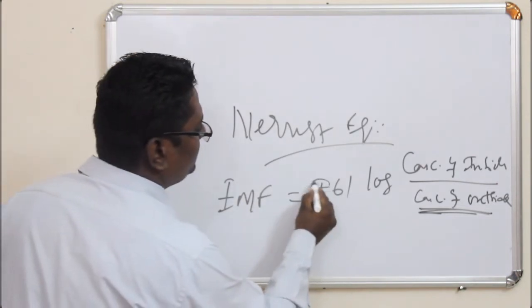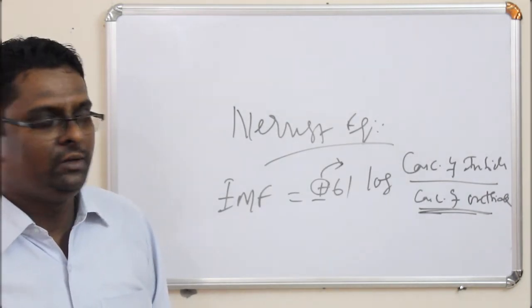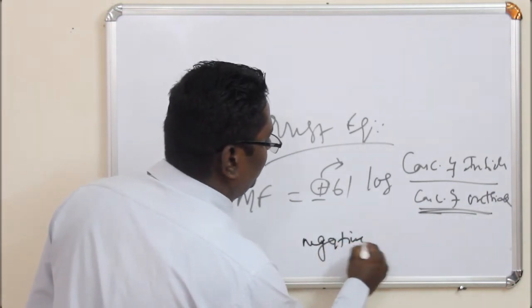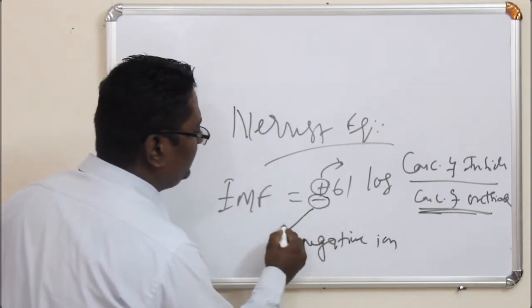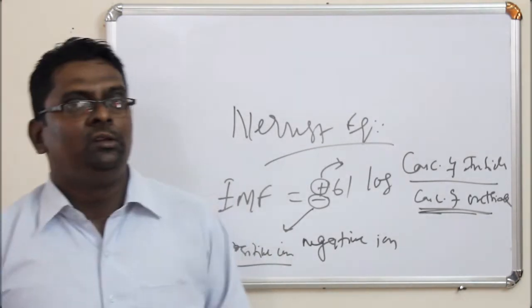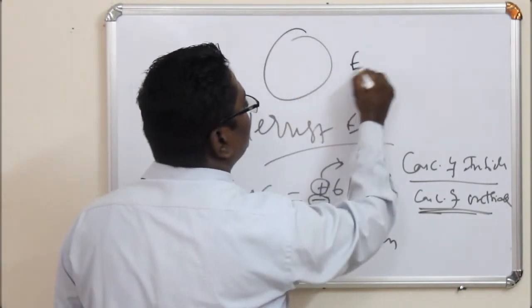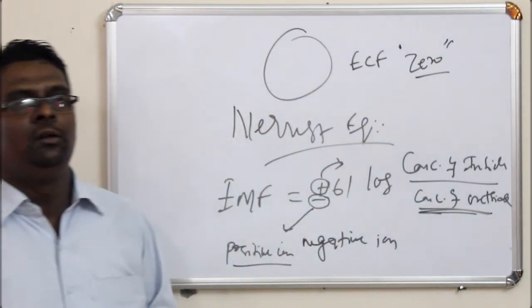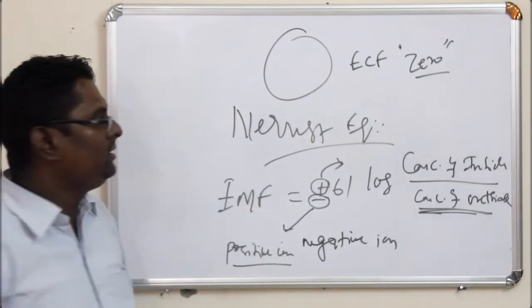The positive sign is used whenever the diffusing ion is a negative ion, and the negative sign is used whenever the diffusing ion is a positive ion. While using this equation, it is assumed that the potential outside the cell — that is, in the ECF — is considered to be zero. The calculated Nernst Potential is the potential for that particular ion inside the cell.